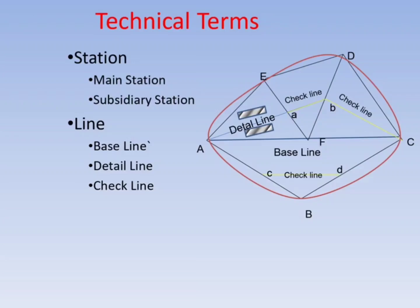Detail lines: If important objects are far away from the main line, offsets become too long, resulting in inaccurate measurements and more time. In such cases, secondary lines are run by selecting secondary stations on the main line. Check lines connect the main station and substation on opposite sides, or connect substations on the sides of main lines, and their purpose is to check the accuracy with which main stations are located.